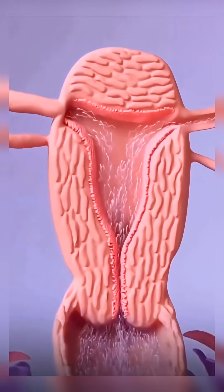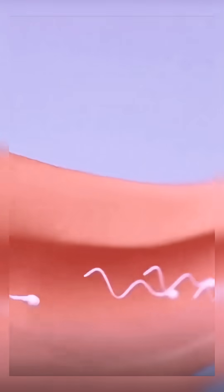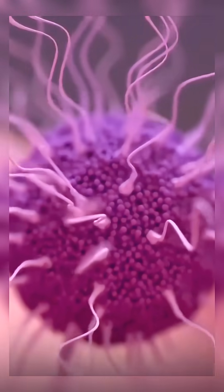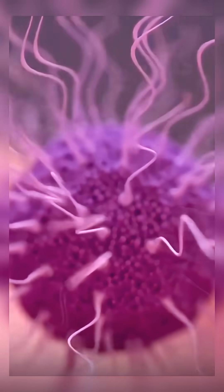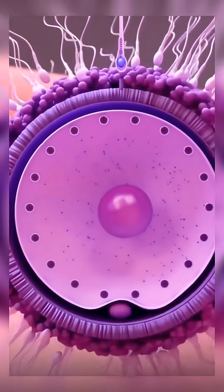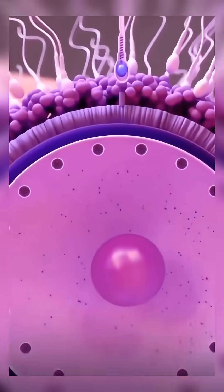Pregnancy is a complex physiological process that begins with fertilization, when a sperm cell fuses with the oocyte to form the zygote. The zygote undergoes rapid cell divisions, or cleavage, and develops into a blastocyst, which travels through the fallopian tube and implants into the endometrial lining of the uterus — a process called implantation.